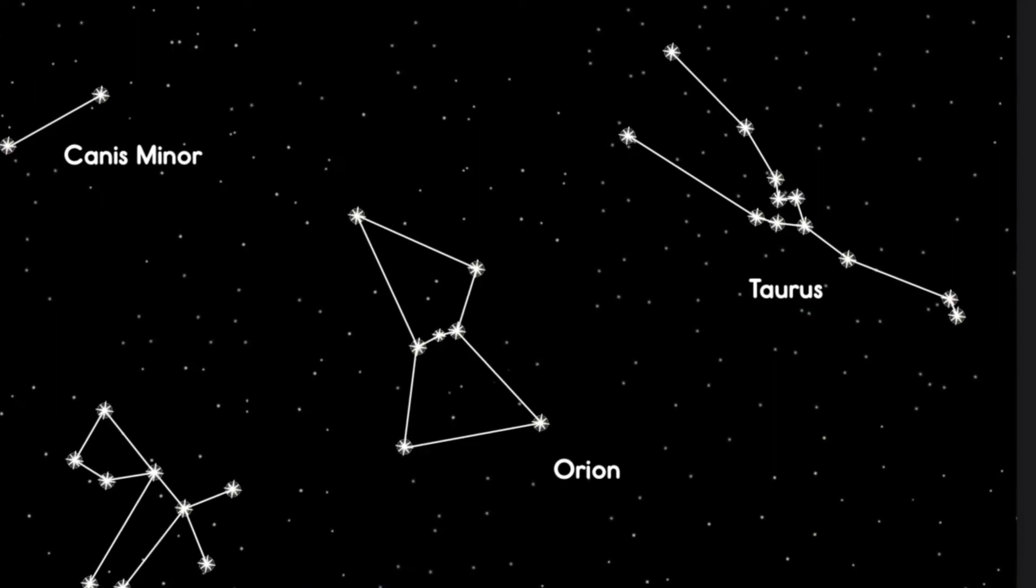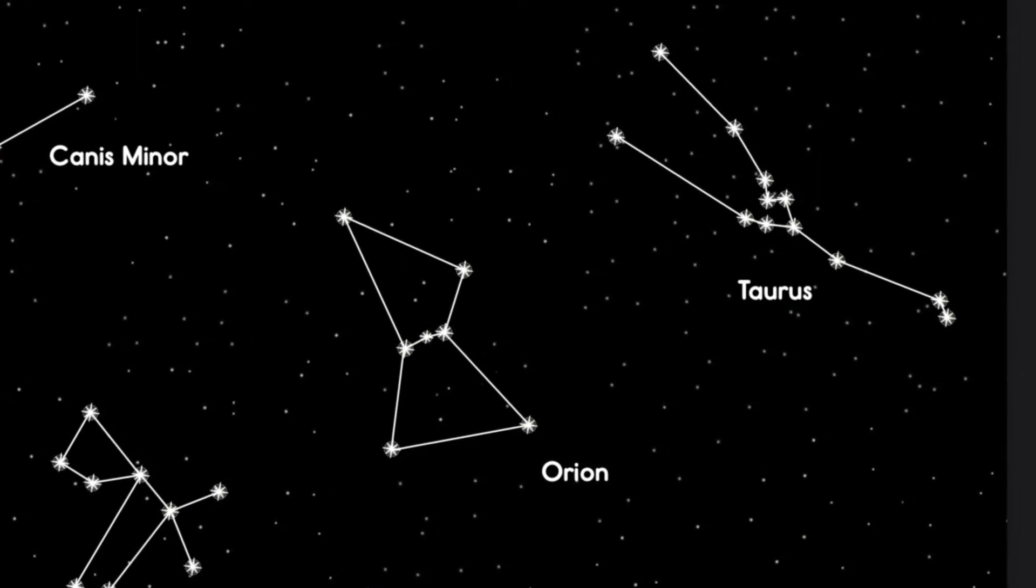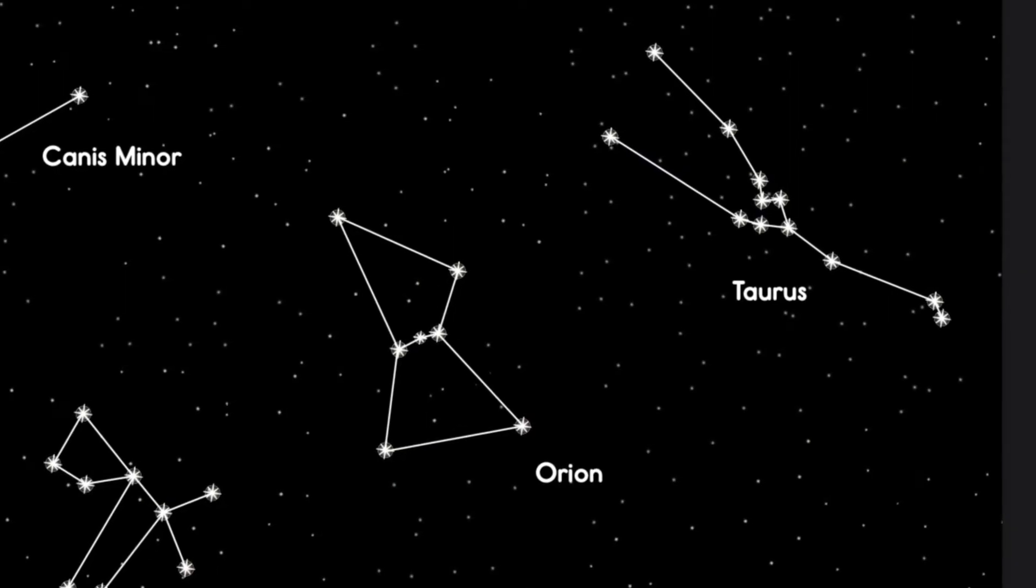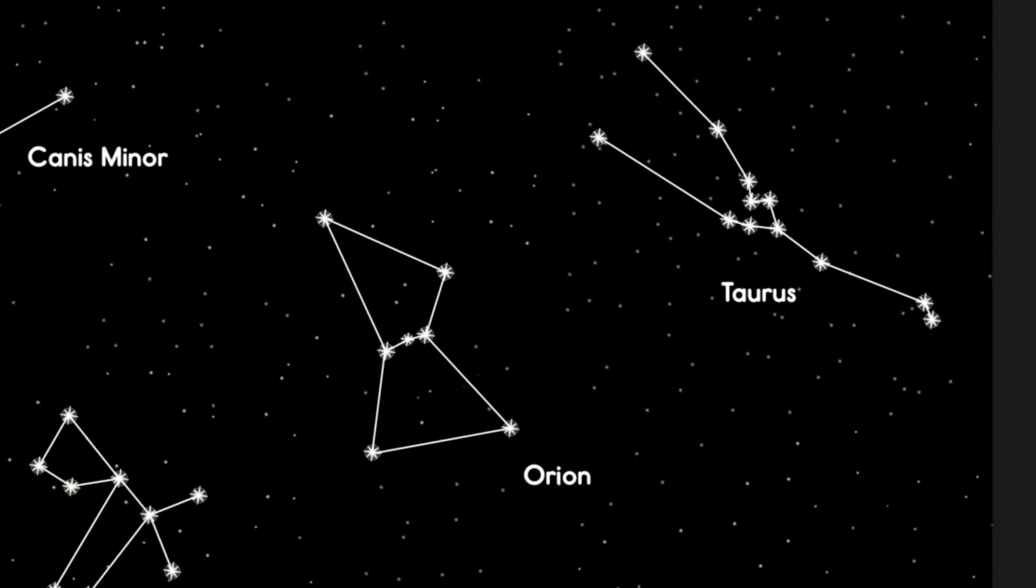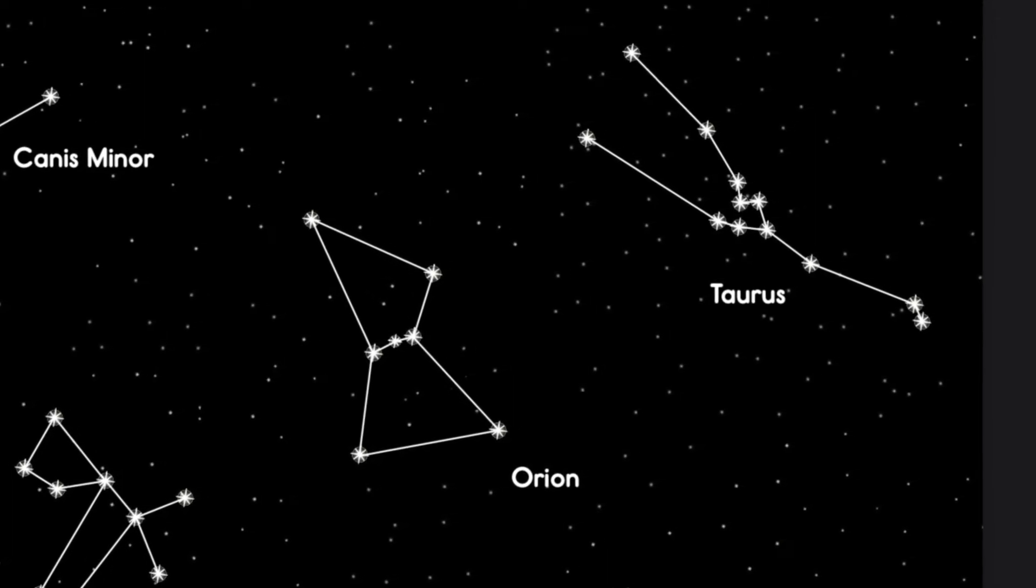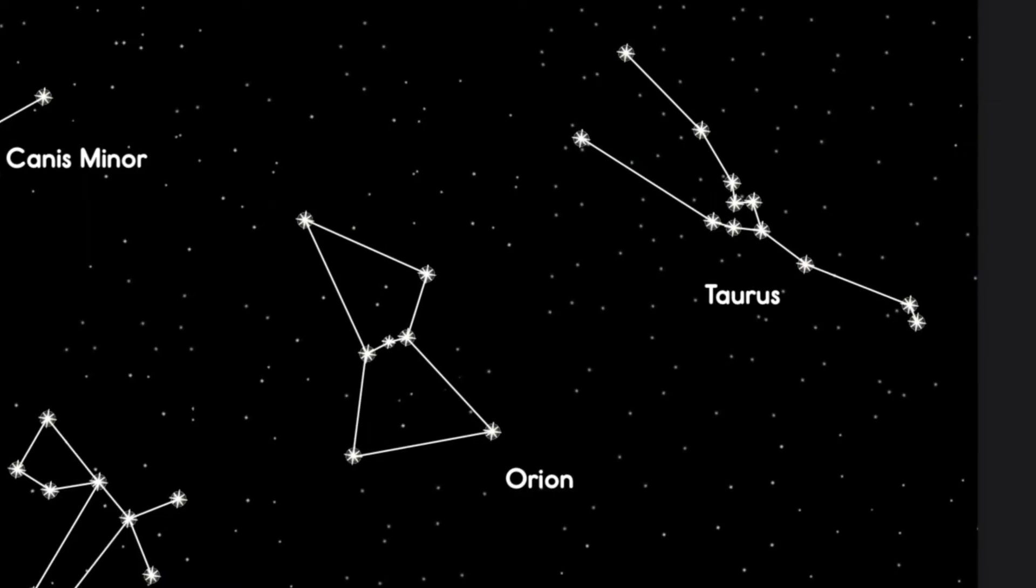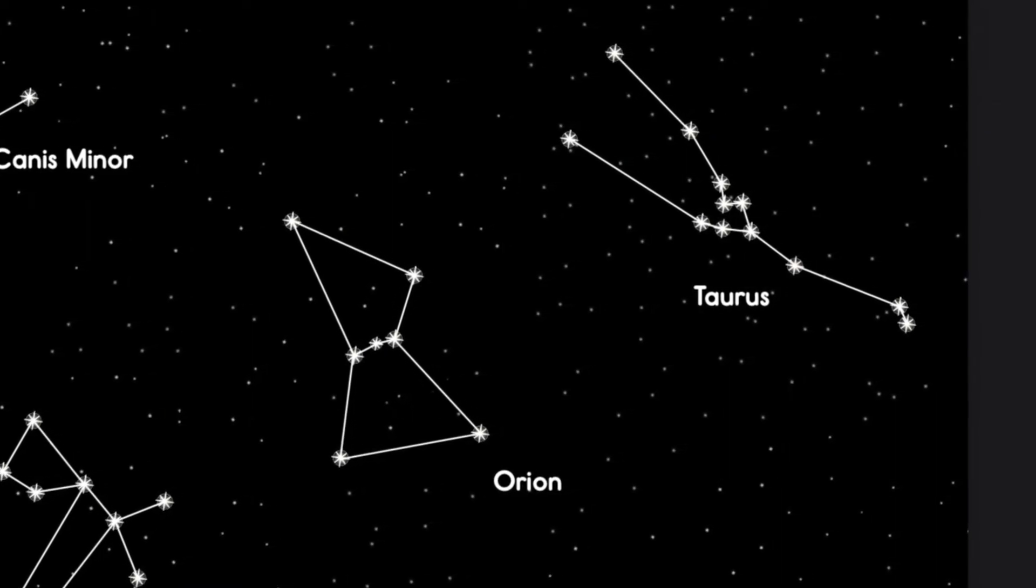Not far from the Orion constellation is Taurus, which shows the head and horns of a mighty bull. It is often said that the hunter Orion is fighting the bull Taurus. So, according to the myths, Orion has a tough time up there. He's being chased by a giant scorpion at the same time he's fighting a giant bull.